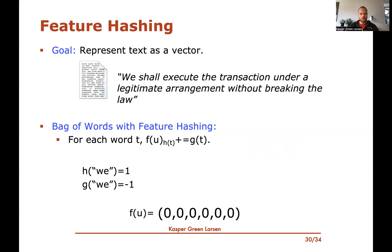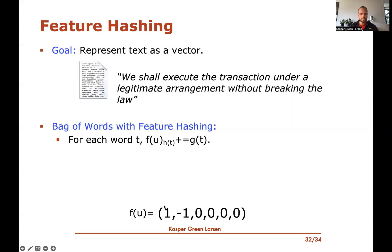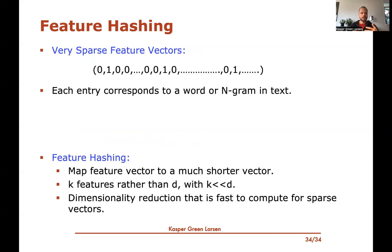For example, the word 'V' might hash to position one with sign minus one, so you subtract one from that position. The next word hashes to zero with sign one, adding one there. 'Execute' hashes to position four with sign one, and so forth. This directly produces the feature-hashed vector. By choosing K small enough — perhaps a few hundred — you can plug the result directly into a neural net, which you could not do with the original sparse representation.